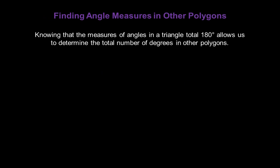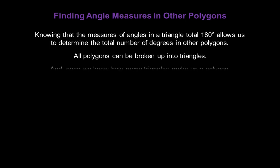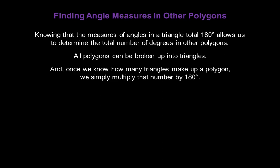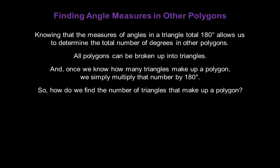Now, how do we find angle measures in other types of polygons? Knowing that the measures of angles in a triangle total 180 degrees allows us to determine the total number of degrees in other polygons. All polygons can be broken up into triangles, and once we know how many triangles make up a polygon, we simply multiply that number by 180 degrees.